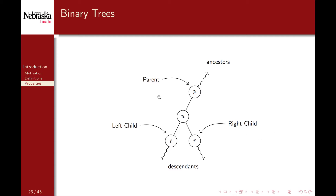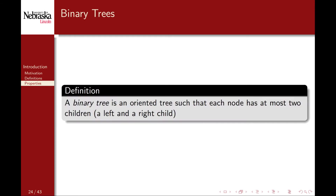Ancestor nodes are further up in the tree, and descendant nodes are further down in the tree. Like a family tree, parents are depicted above children. What we've just defined are called binary trees — oriented trees such that each node has at most two children. The term binary is used because of this two-child limitation.